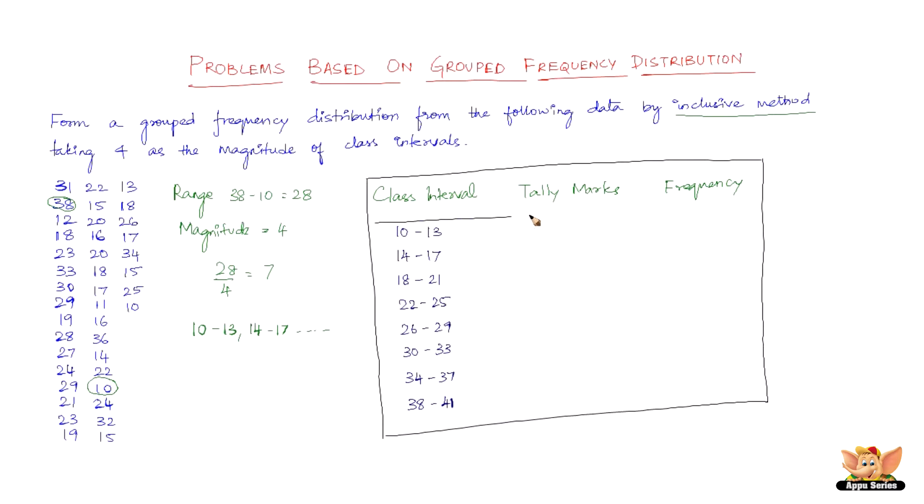Repeating it again, this is by inclusive method. Now 10 to 13 we've got 5 of it, 14 to 17 we've got 8, 18 to 21 again we've got 8, 22 to 25 we've got 7, 26 to 29 we've got 5, 30 to 33 we've got 4, 34 to 37 we've got 2, and 38 to 41 we've just got 1.